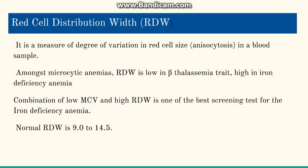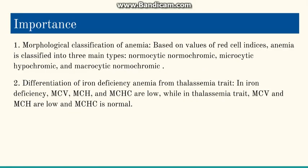Going to the importance of RBC indices — the main importance is the morphological classification of anemias. Based on these indices, anemias are differentiated into three types: normocytic normochromic anemia, microcytic hypochromic anemia, and macrocytic normochromic anemia. There is no hyperchromic anemia. This classification is made on the basis of RBC indices, and a very important differentiation of iron deficiency anemia from thalassemia trait is also made using various RBC indices.